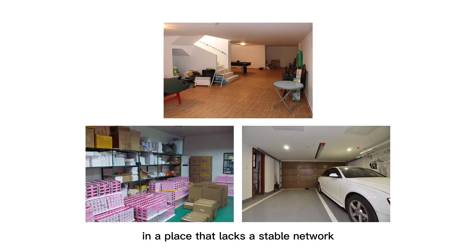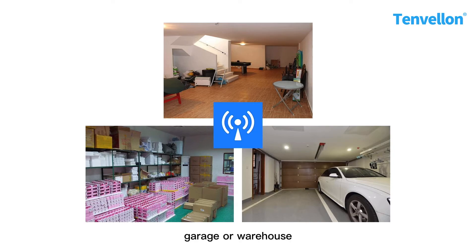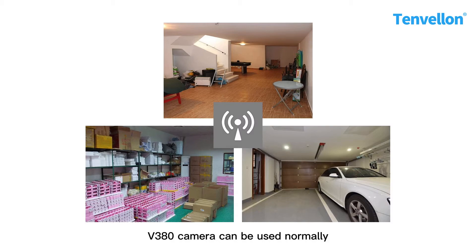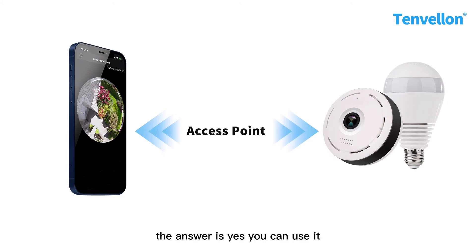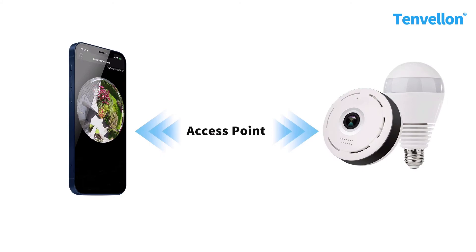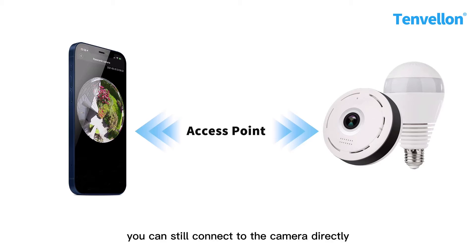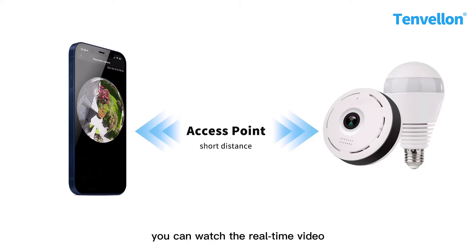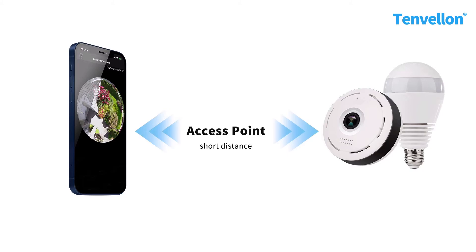The third question is offline use. Some people want to install the camera in a place that lacks a stable network or has no network at all, such as a basement, garage, or warehouse. They want to know whether the V380 camera can be used normally without any network. The answer is yes — you can use it, but many features are not available. Even without a network, you can still connect to the camera directly via the access point signal, watch live video, and turn on the recording function.